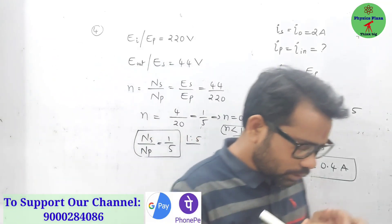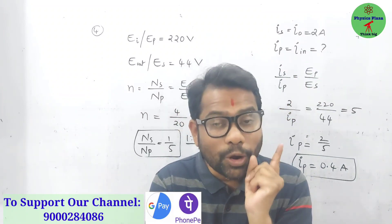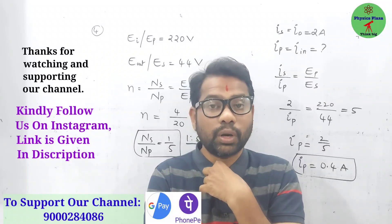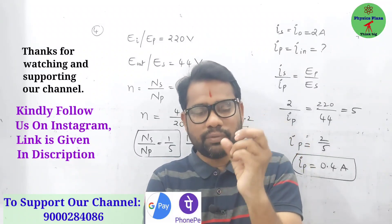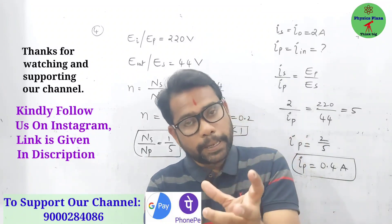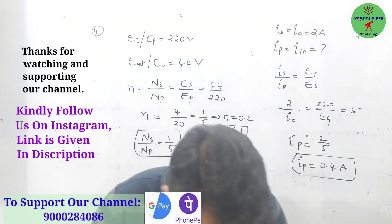These are the four numericals, simple numericals children, but concept based. If you are okay with the transformer, if you understand how EMF is related to the number of turns and how the number of turns are related to the currents in primary coil and secondary coil, then only you are able to do it.